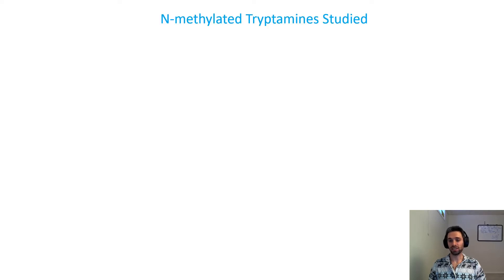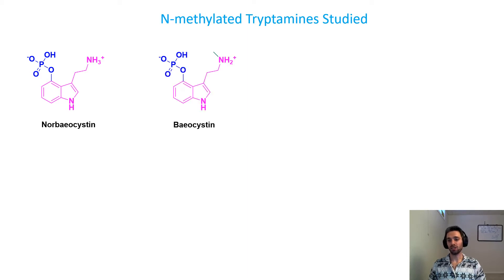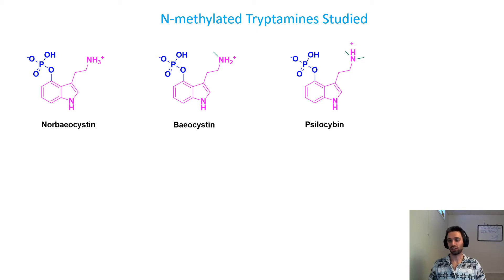The following compounds studied were synthesized in the publication, but not all of them were run in bioassays. The first compound, norbeocystin, has the classic tryptamine backbone highlighted in purple and the phosphate group in blue that is seen in psilocybin. Then we have baocystin, which has pretty much the same structure, only substituted one of the hydrogens for a methyl group. Then we have psilocybin, which is the active compound in psychedelic mushrooms — this has two methyl groups substituted for two hydrogens.